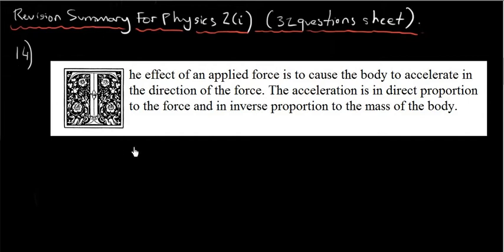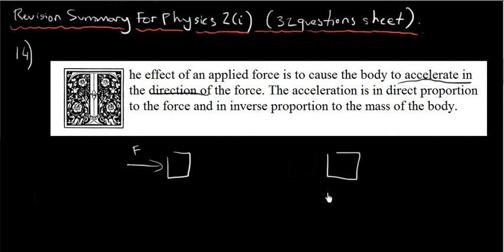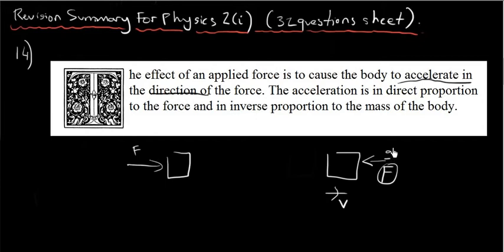And in inverse proportion to the mass of the body. So if a force acts on an object, the acceleration will be in the same direction as the force. If the force is acting in one direction, it will accelerate that way. But if the object is already moving and the force acts as a resistance, the acceleration happens in the opposite direction and it will slow down — still moving forward, but decelerating. The bigger the force, the bigger the acceleration.